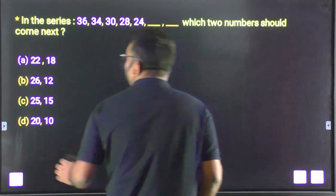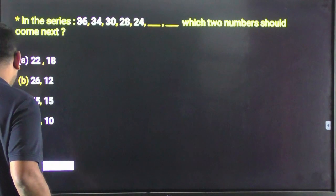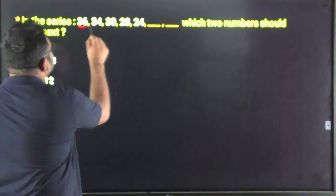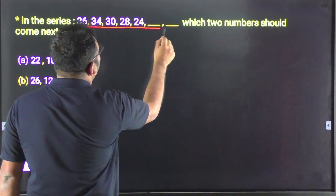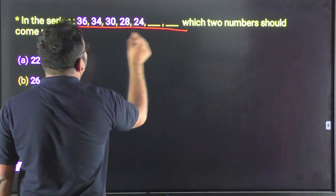Next question: in the series 36, 34, 30, 28, 24 — which two numbers should come next?